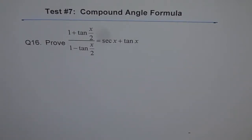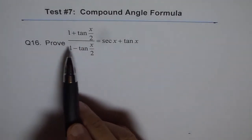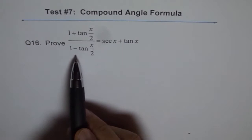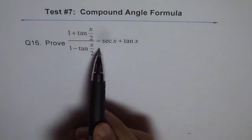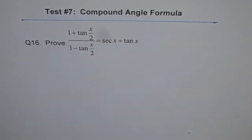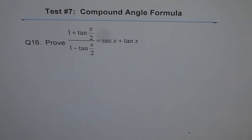Question 16, Test 7 on compound angle formula. Prove that (1 + tan(x/2)) / (1 - tan(x/2)) equals sec x + tan x. Try to do this question — it may be a bit lengthy. You can also review your double angle formulas to solve this. Here is my solution.